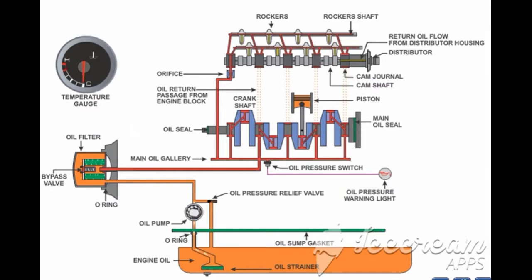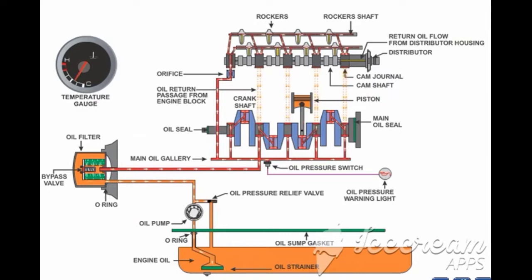Oil in the oil pan is pulled up by the oil pump through the oil strainer. The oil strainer filters out the large particles. The oil pump pressurizes the oil and pushes it towards the oil filter. The oil filter traps the smaller particles contained in the oil.